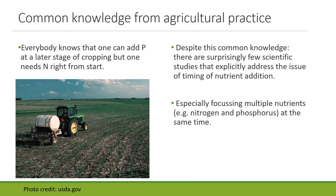From common agricultural practice we know that you can add phosphorus at a later stage of cropping, especially in medium to high phosphorus soils, without having a decreasing yield. But nitrogen you really need from the start if you want to achieve a high yield. Interestingly, while this is common knowledge, we find very few studies that explicitly test the timing effect of adding nutrients, especially focusing on multiple nutrients at the same time.